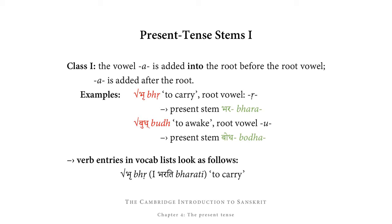On the basis of the root budh 'to awake,' which has a root vowel u, we get the present tense stem bodha. Adding 'a' in front of 'u' does not result in 'au' as one might expect, but rather au in Sanskrit changes into o — because o is one of the complex vowels, which is the result of earlier a+u. So baudha becomes bodha.